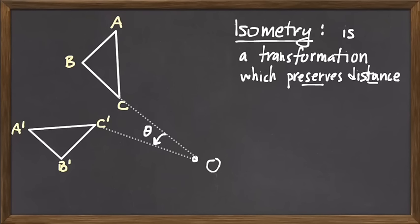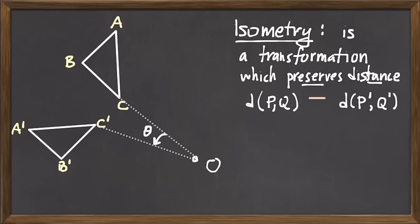That it preserves distance means that the distance between any two points — the distance between the images of those two points, P' and Q' — those distances are required to be the same. So in this diagram, the length of side AB in the pre-image triangle has to agree with the length of side A'B' in the image under this transformation, and likewise for the other pairs of sides. Any transformation under which the distance between pre-images agrees with the distance between images is what we'll call an isometry.